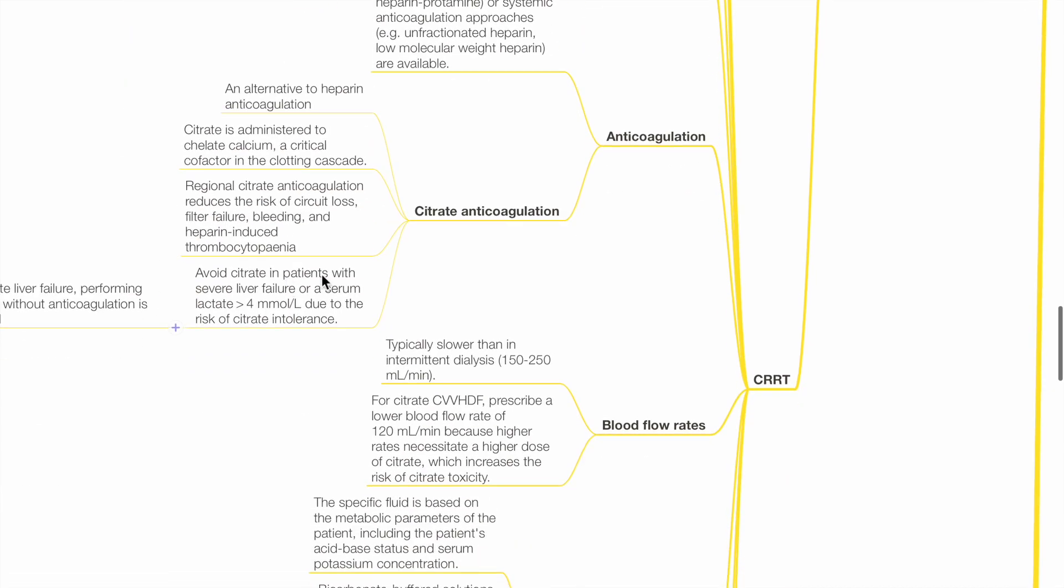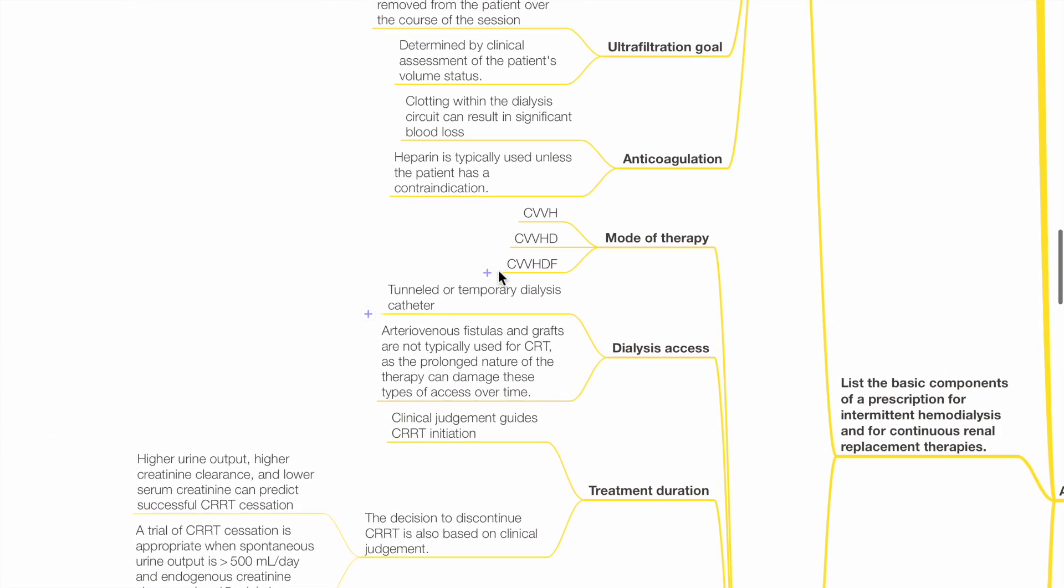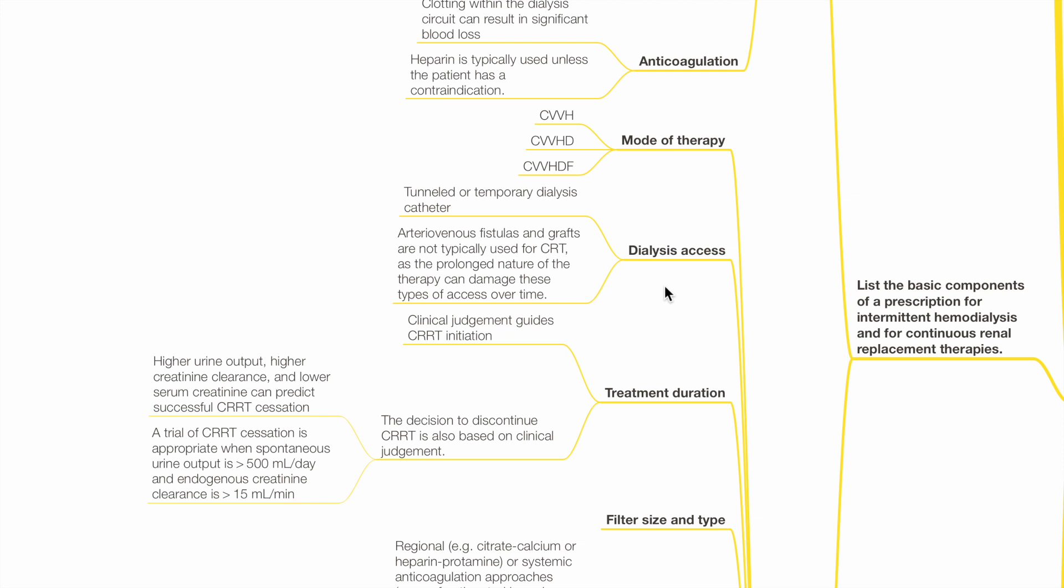For CRRT, mode of therapy should be specified such as CVVH, CVVHD or CVVHDF. Dialysis access is usually dialysis catheter. AV fistula or grafts are not typically used for CRRT as the prolonged nature of therapy can damage these types of access.